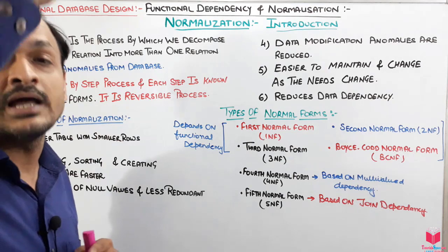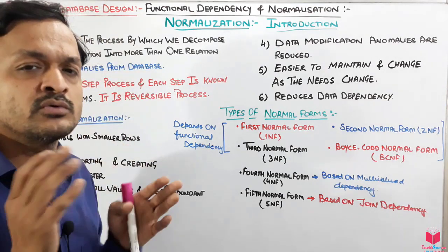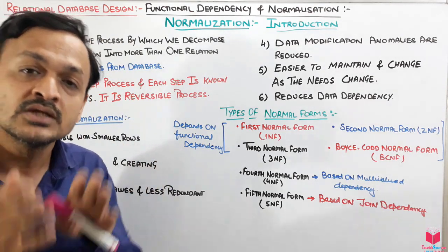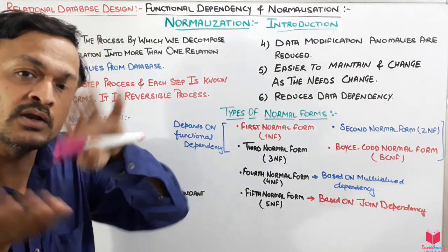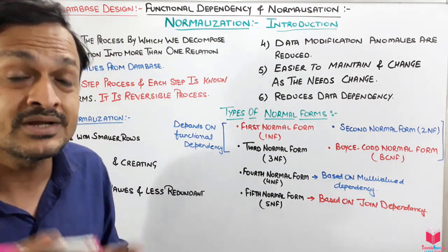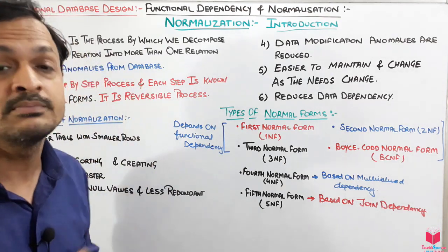It is also a reversible process. For example, if you are at the fourth level and you think you have done something wrong, you can revert back to the third level. So normalization is a reversible process.